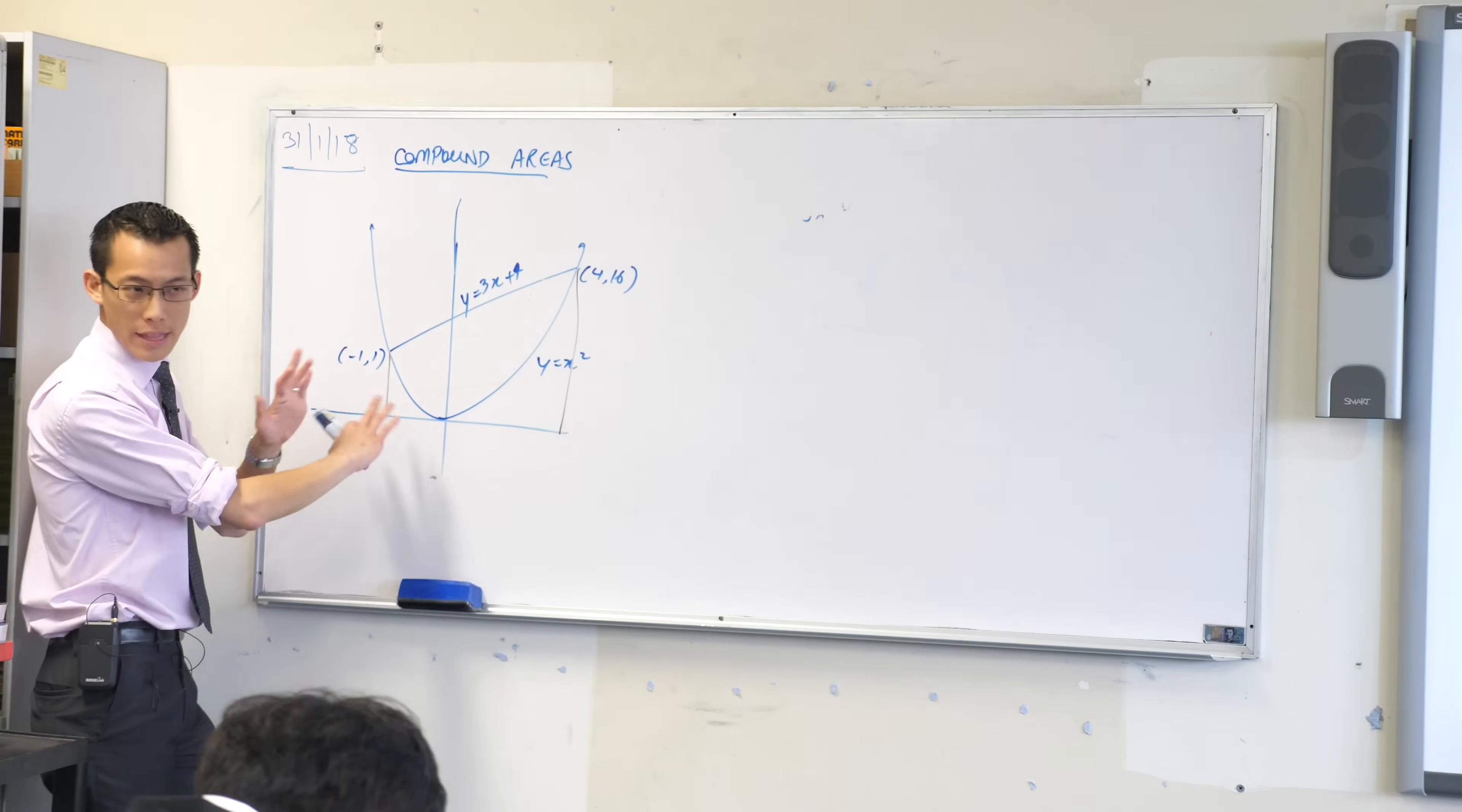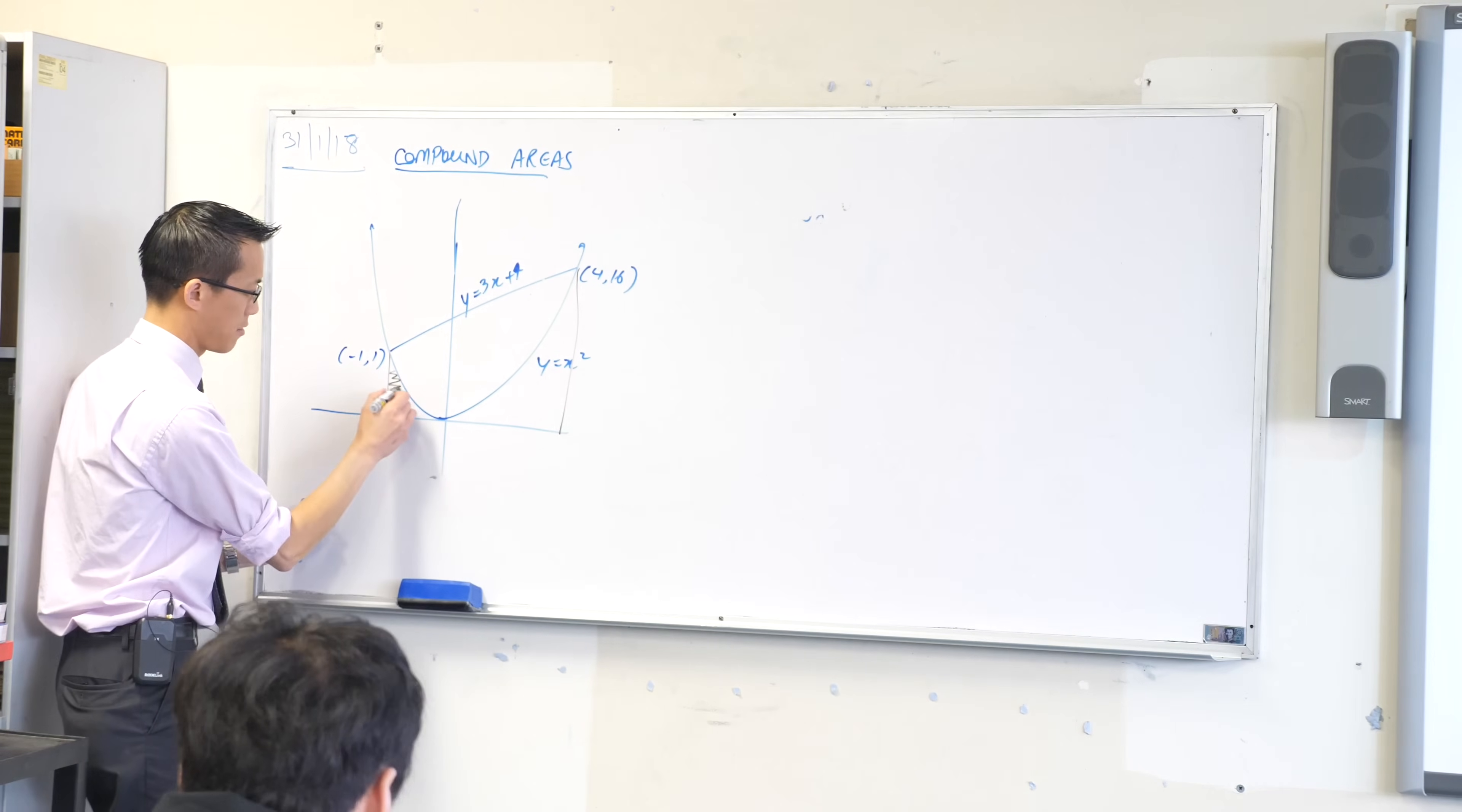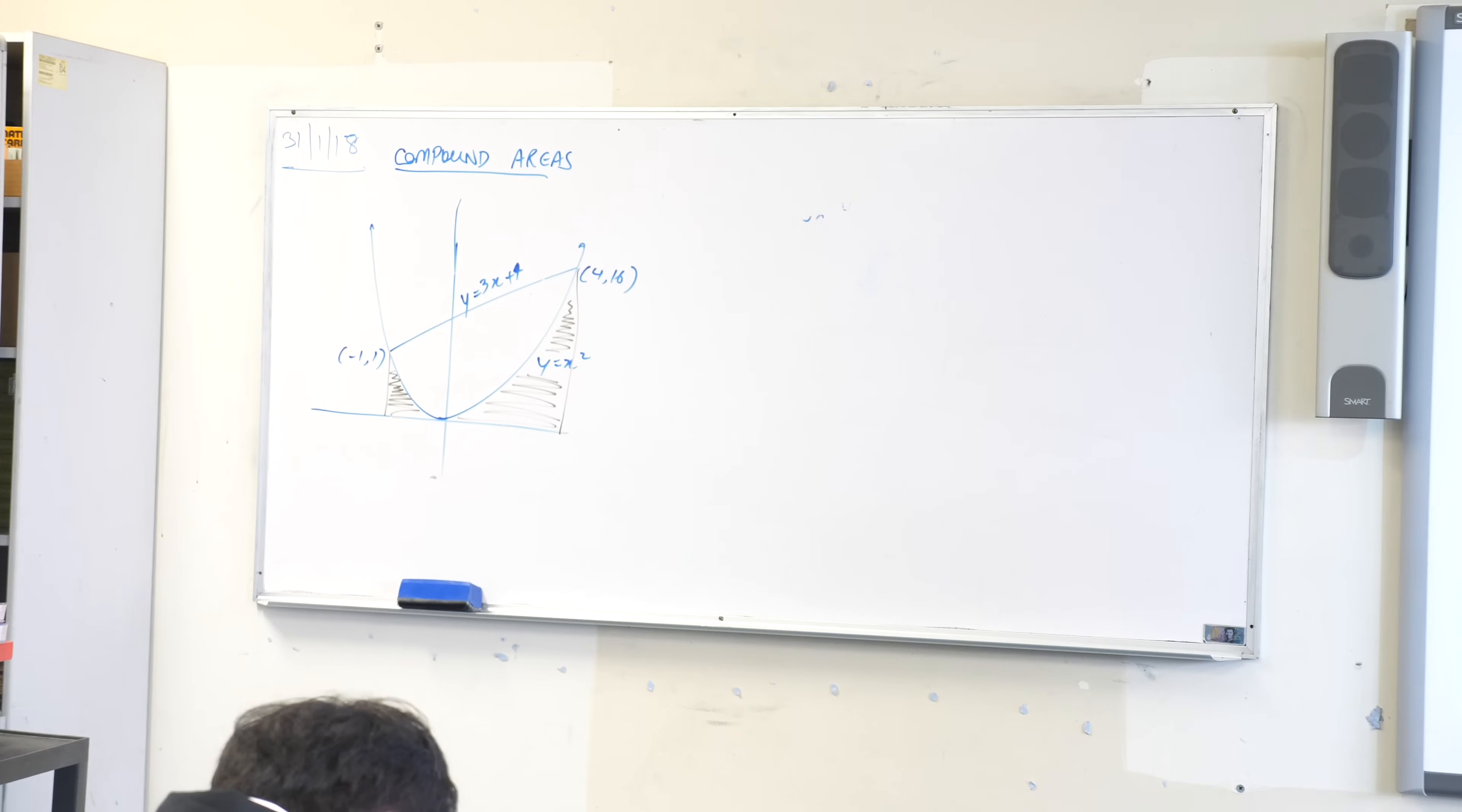If you look at this shape without anything shaded, I have a part of this area that's underneath the parabola. It's this part. This part here is underneath the parabola. It's an area under a curve. Which means we can find it by what technique? Integration.